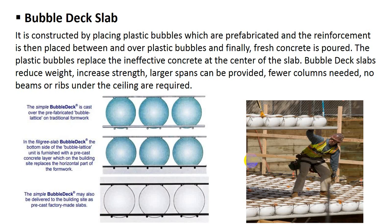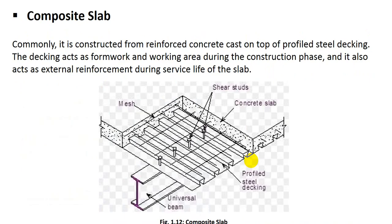Composite slab uses different types of materials. It is commonly constructed from reinforced concrete cast on top of profiled steel decking. The decking acts as formwork and a working platform during the construction phase, and also acts as external reinforcement during the service life of the slab. First, the profiled steel deck is placed, then reinforcement is provided on top of that, and after that concrete is poured.